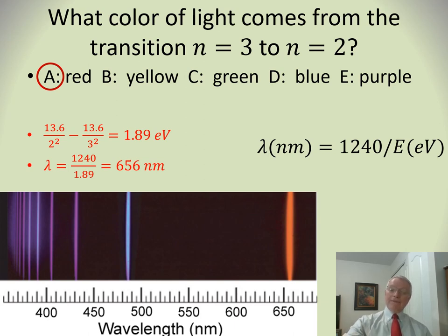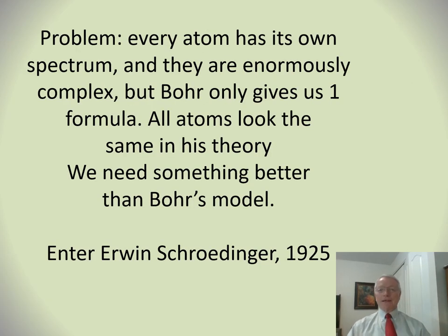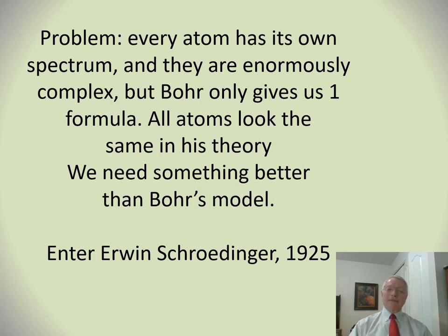Everyone was really excited — someone finally had an explanation for those discrete colors. Niels Bohr got the Nobel Prize for this, even though the theory was woefully inadequate — no discussion of how the radiation takes place, no clue about why the orbits are stable. But because it agreed with experiment so well, he got the prize, and he deserved it. The problem is that every atom has its own enormously complex spectrum, and Bohr's one formula works well only for hydrogen. We need something better.